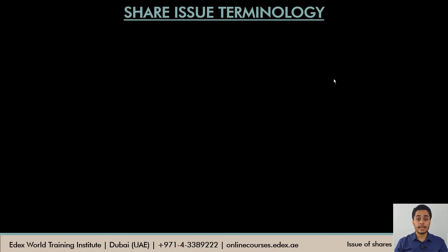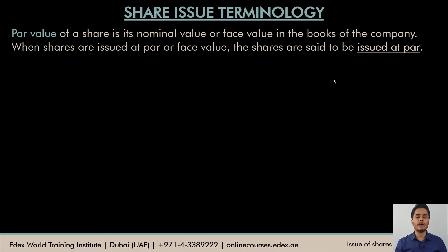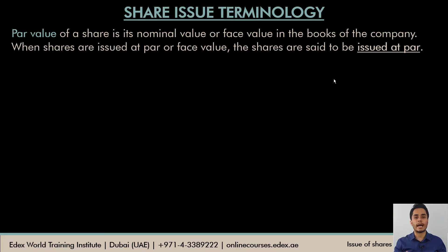Let us understand some important technical terms related to share issue. First, we have the par value of a share. The par value is also the nominal value or the face value — that is the value of the share in the books of the company. A company can issue shares at face value, and when it does so, the issue is said to be done at par. Shares are said to be issued at par.